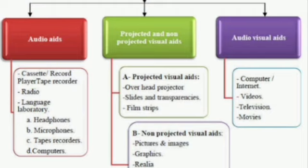Second type: projected and non-projected visual aids. Projected visual aids include overhead projector, slides and transparencies, and film strips. Non-projected visual aids include pictures and images, graphics, realia, model, boards, and display.